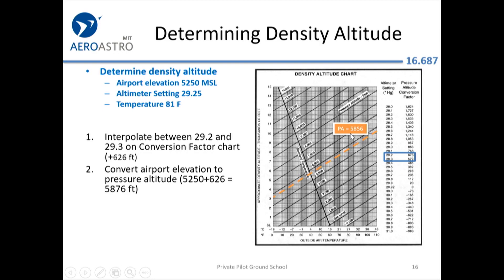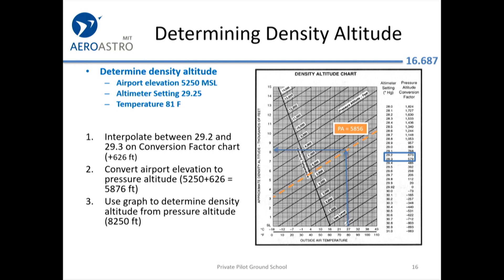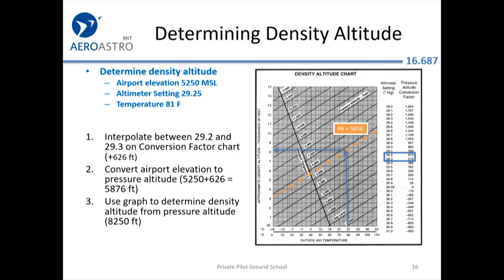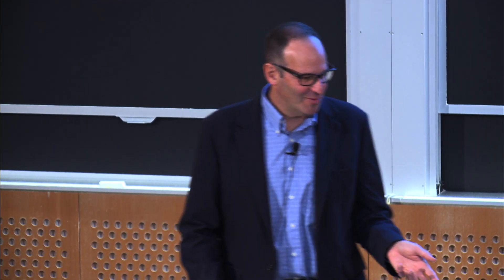With a temperature of about 81 degrees Fahrenheit, you go over to the left and read off the density altitude — about 8,250 feet, which is about 2,400 feet higher than the pressure altitude. In the summertime, density altitude is usually about 2,000 feet higher than pressure altitude. At 5,000 feet, standard temperature is only about 7 degrees Celsius, but if it's 27 degrees Celsius at 5,000 feet, that's ISA plus 20.